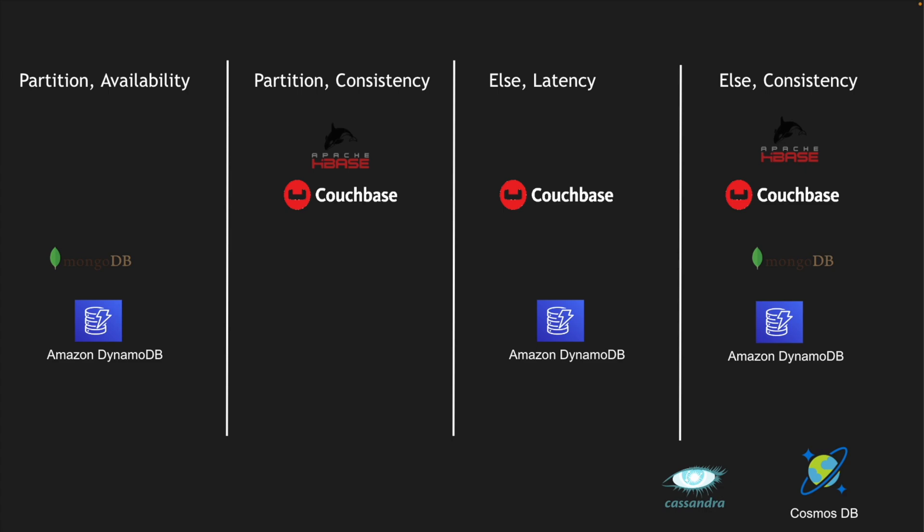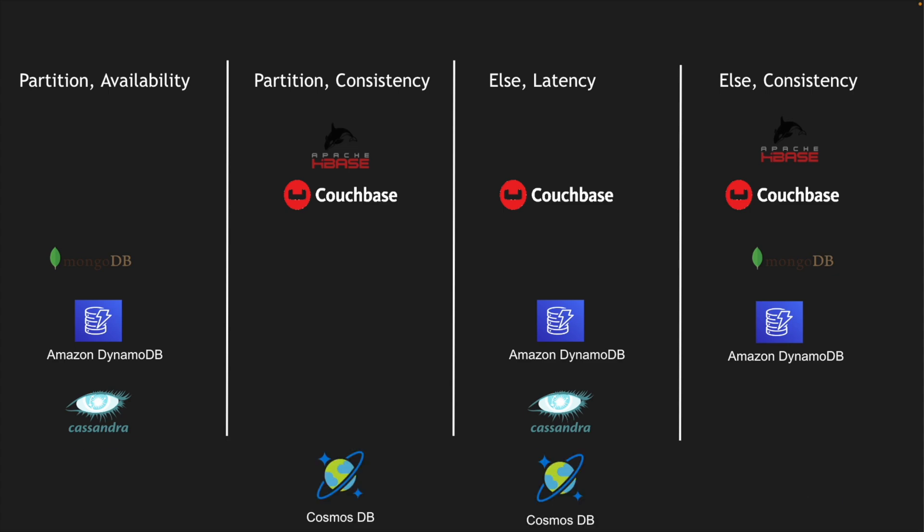Cassandra caters towards partition availability, and when there is no partition it prioritizes latency or consistency — a slight variation from DynamoDB. Finally, Cosmos DB prioritizes consistency when there is a partition, and latency when there is no partition. These are the different modern databases and how they fall into different PACELC categories.